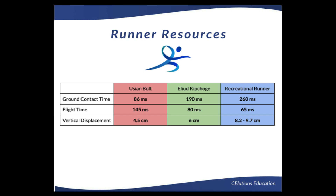The lower your ground contact time, the more efficiently you are running, with more power generation in each step. Usually, we want to keep recreational runners under 300 milliseconds. Runners should also have a high flight time. Flight times should be between 0 and 50% of your ground contact time. The vertical displacement for running efficiently should be low. Recreational runners should not exceed 9.7 centimeters.